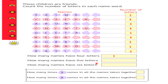How many names have five letters? Let's see — Salma, then Geeta, Subbu, and Ahmad. They have five letters, so four names have five letters. How many names have six letters? Let's check — Joseph and Chintu. So only two names have six letters. Let's write two.